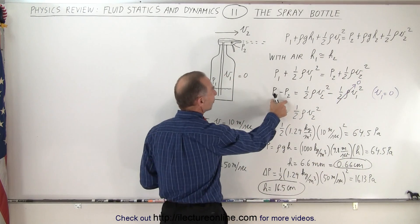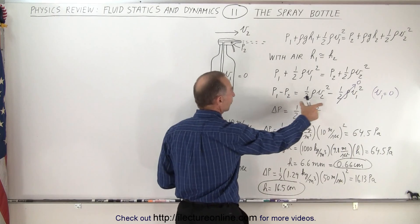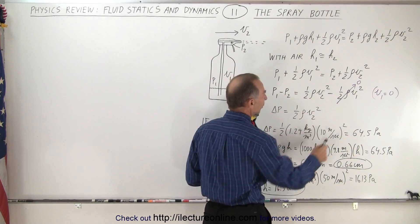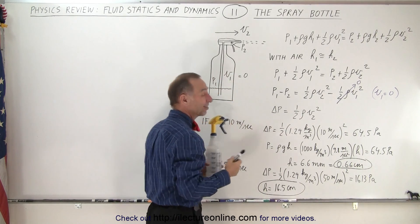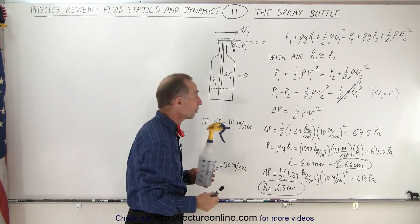And then if we solve for the difference in pressure, it's simply going to be equal to the difference between these two terms. Now this term goes to zero because the velocity of the air inside the bottle is essentially zero, so we can ignore that part.